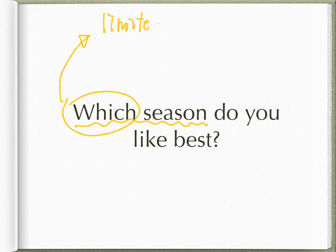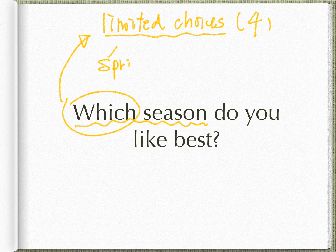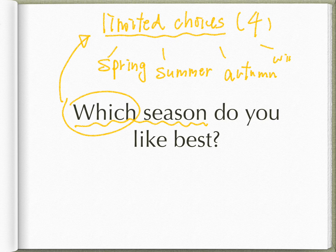First of all, look at this question: which season do you like best? We use 'which' when there are limited choices in our answer. In this case, you can only answer with one of the four choices: spring, summer, autumn, or winter.